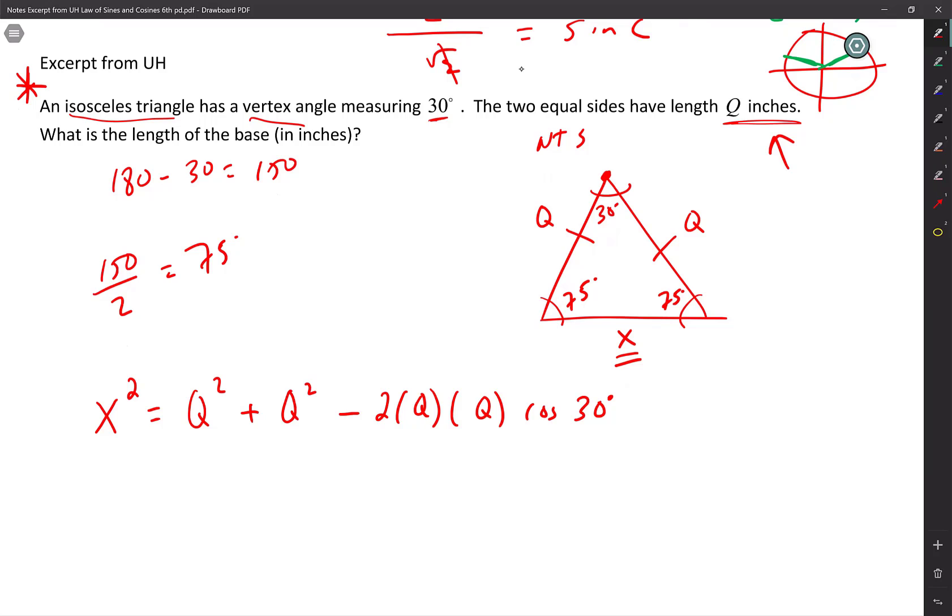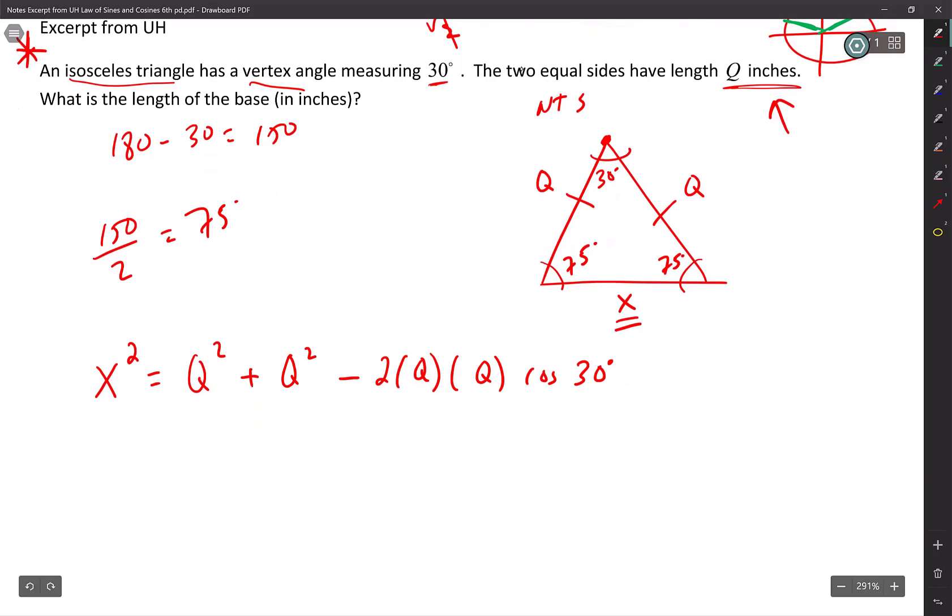And that's it. You're done with pre-calc. Now the rest is algebra. So this is why sometimes algebra can be kind of hard. So here we go. X squared equals, and I got two of these dudes. So I'm going to say 2Q squared minus 2 times Q times Q. That's another 2Q squared. Cosine 30 degrees is square root of 3 over 2.